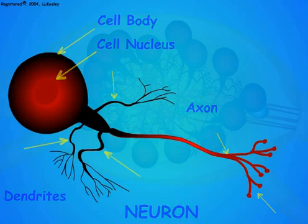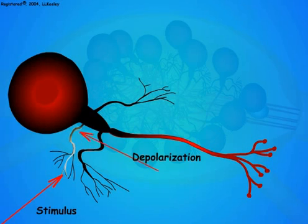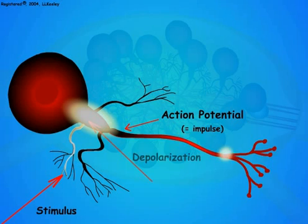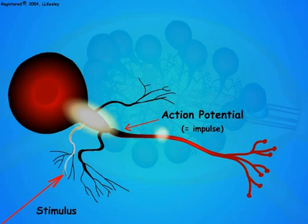Information comes into the neuron as a stimulus to the dendrites. The dendrites convert the stimulus into an electrical discharge or depolarization. Depolarization means that the neuron membrane has changed from a positive electrical charge on its surface to a negative electrical charge. The stronger the stimulus intensity, the greater the dendrite depolarization. When the dendrite depolarization reaches the axon, it changes into a strong electrical impulse called the action potential. The more intense the depolarization message, the greater the number of action potentials.